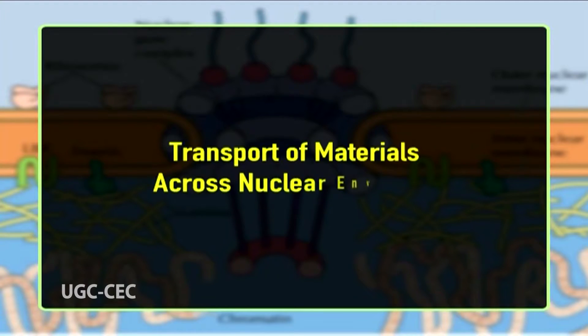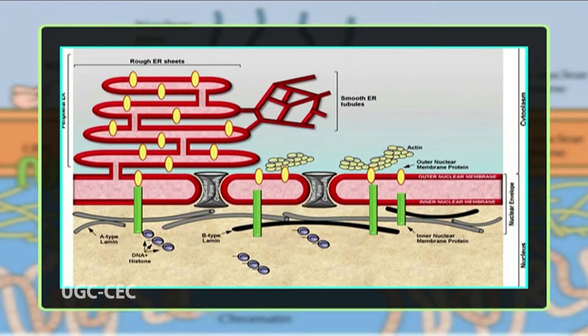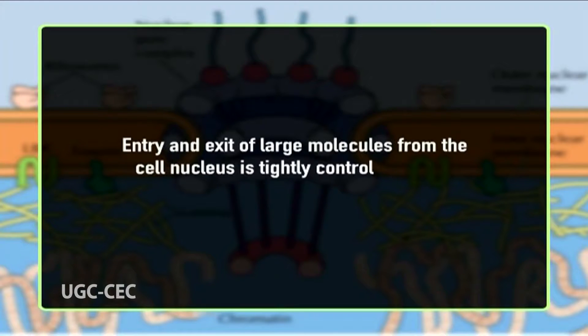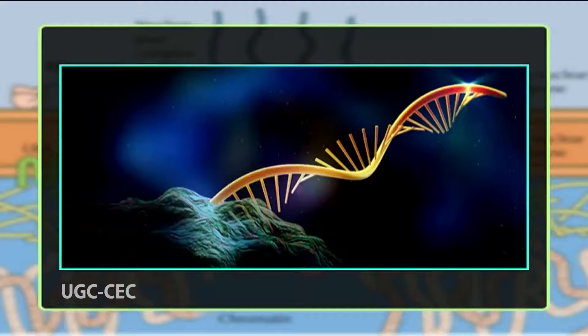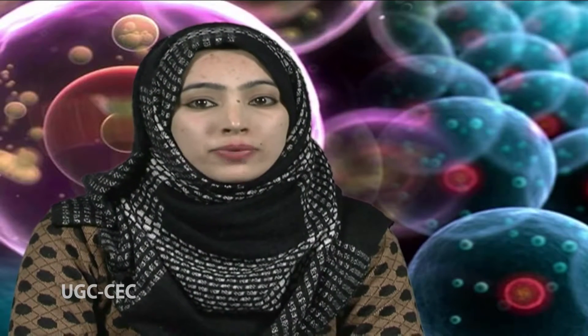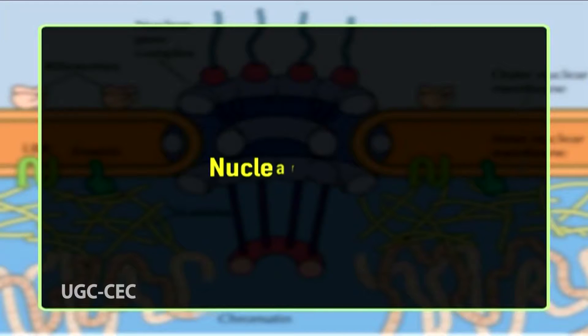The nuclear envelope separates the contents of the nucleus from the cytoplasm and provides the structural framework of the nucleus. The nuclear membranes act as barriers that prevent the free passage of molecules between the nucleus and the cytoplasm, maintaining the nucleus as a distinct biochemical compartment. The entry and exit of large molecules from the nucleus is tightly controlled by the nuclear pore complexes. Although small molecules can enter without regulation, macromolecules such as RNA and proteins require association with transport factors — importins to enter the nucleus and exportins to exit. Proteins that must be imported carry nuclear localization signals bound by importins.